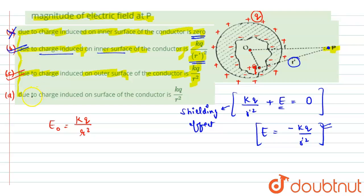In option D we are having that due to charge induced on surface of the conductor is KQ by R square. See here we have two surfaces, one is this void and one is the outer surface of the shell. So we are having two surfaces, but here it is talking about just the outer surface, KQ by R square. But we are having two surfaces, thus option D is also incorrect.